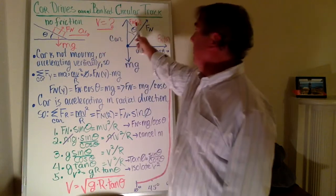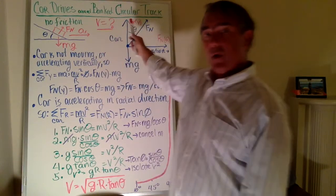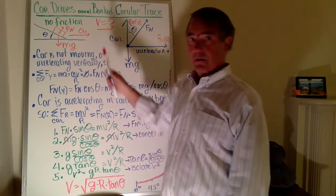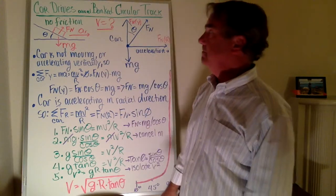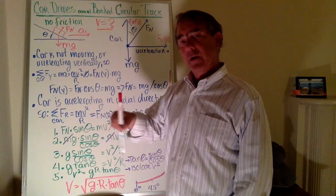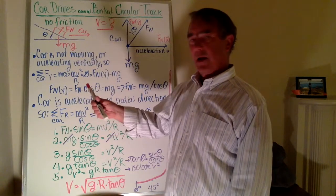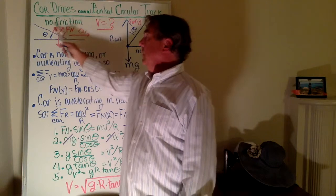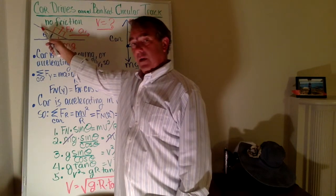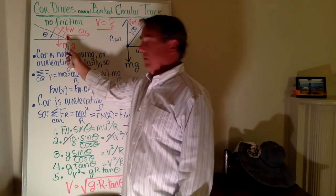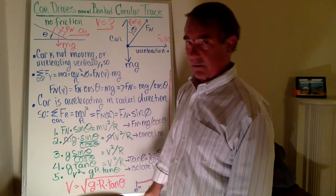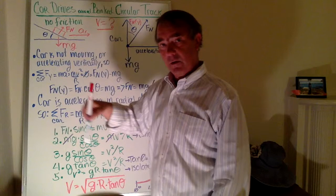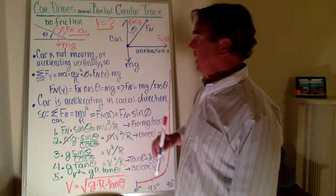The problem is a car drives around a banked circular track. There's no friction, and the question is how fast can this car go without skidding or slipping? This is a car driving in a circle on a track that is banked inward. If the car drives too fast it'll skid up the bank, and if it's driving too slowly it will slide down the bank. So the question is precisely what speed can this car drive around this track without skidding?